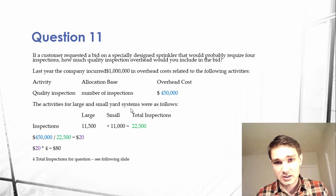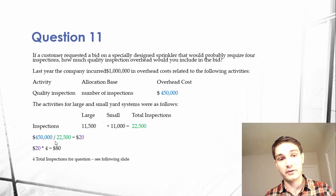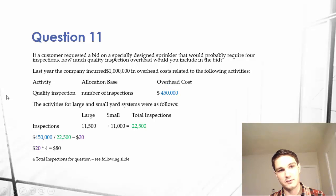We also know it costs $450,000 total for overhead costs. So $450,000 divided by the total number of inspections (22,500) gives us our overhead cost per inspection, which is $20 per inspection. We found this by taking the total overhead costs for quality inspections and dividing by the total number of inspections.